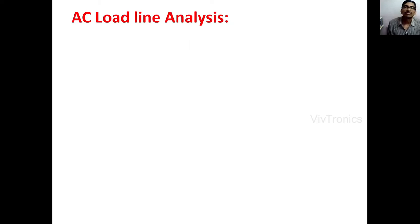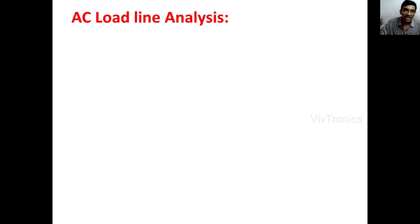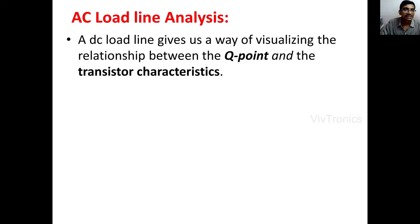Hello students. Up to now we have seen the CE amplifier analysis with and without emitter resistance and bypass capacitors. Now we are going to see the AC load line analysis of a CE amplifier. We already know the DC load line, which gives us the relationship between the transistor characteristics and the Q point.